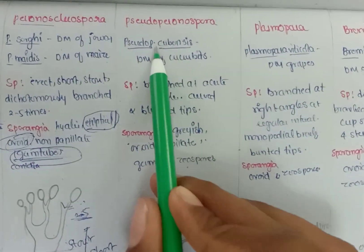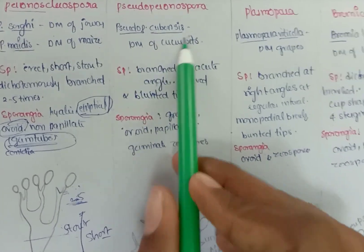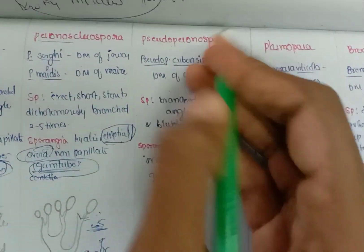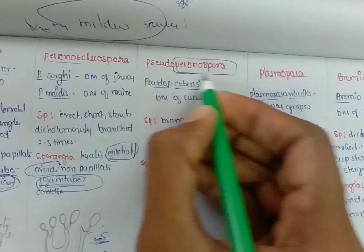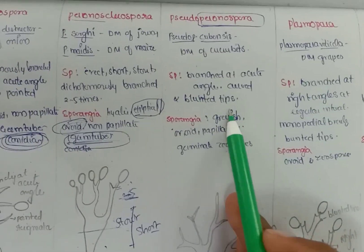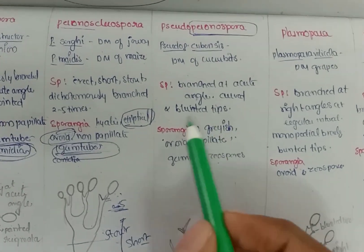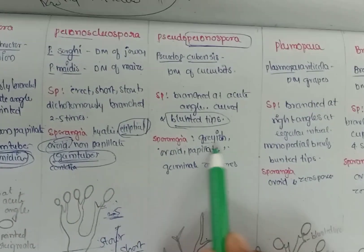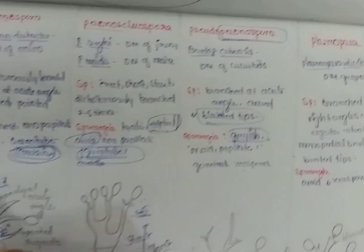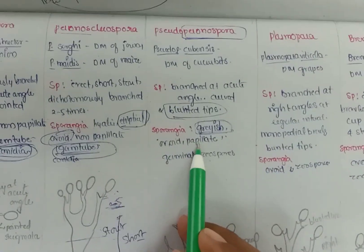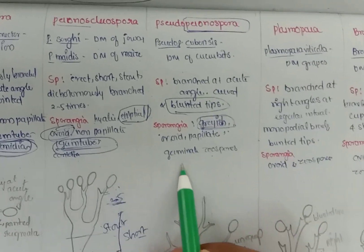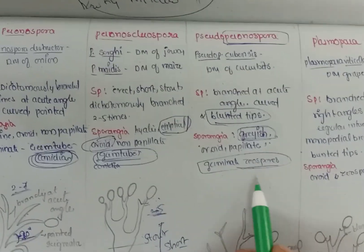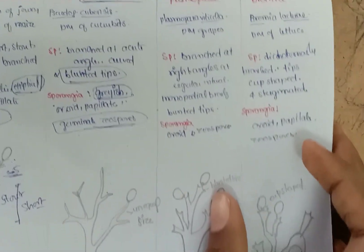Next is Pseudoperonospora — for example, Pseudoperonospora cubensis, the Downy Mildew of Cucurbits. The name indicates similarity to Peronospora, and it is also branched at acute angles. The difference is that it has blunter tips. Sporangia are also different — they are grayish in color, whereas in Peronospora they are hyaline. The sporangia are ovoid, papillate, and germinate through zoospores. Except for Peronospora and Peronosclerospora, all Downy Mildew genera germinate through zoospores.